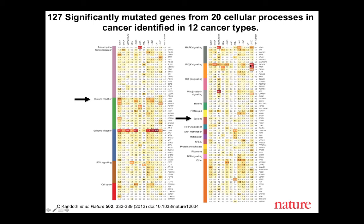VHL is highly recurrently mutated specifically in kidney cancers, and PIK3CA is recurrently mutated across a number of different cancers. Some findings were not surprising, but what was surprising was the new categories of cellular processes involved in tumorigenesis, such as splicing, transcriptional regulation, metabolism, and histones—indicating the potential for new therapies. These new mutational themes would not have been obvious without this broad, unbiased survey.